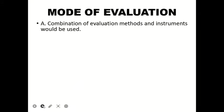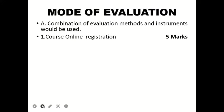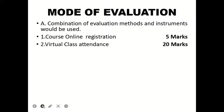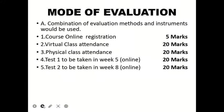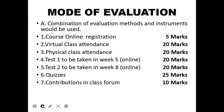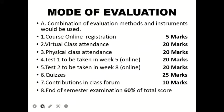How are we going to evaluate you? A combination of ways: online registration is 5 marks; enrollment in Google Classroom is an additional 5 marks; attendance in the virtual class is 20 marks — don't miss it; physical attendance in class is another 20 marks. Test one, to be taken in week five online, is 20 marks. Test two, to be taken in week eight online, is also 20 marks. Quizzes — about five to six of them — will fetch you 25 marks. Contribution in the class forum is 100 marks. The end-of-semester examination is a standard 60% of your total score. Don't miss out on this.